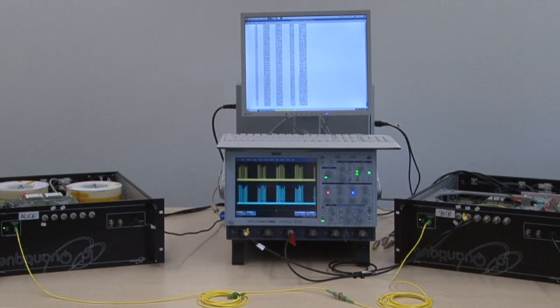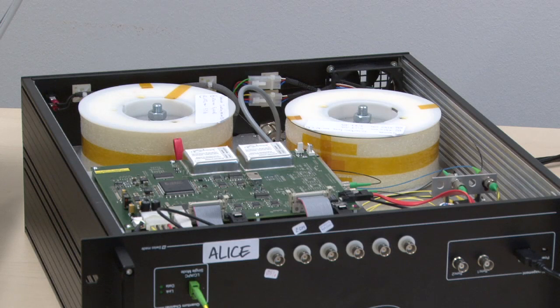On the left side, you see the Alice module. On the right side, you see the Bob module. And they're exchanging secret keys. This is how the Alice module looks from the inside.